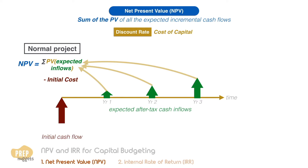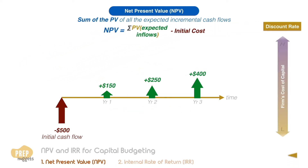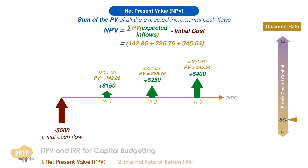For example, the initial cost of a project is $500 and the returns are $150 in the first year, $250 in the second, and a final $400 in the third year. If the required rate of return for the project is 5%, the NPV is the sum of all the present values of the future cash flows minus $500, giving us a figure of $215.